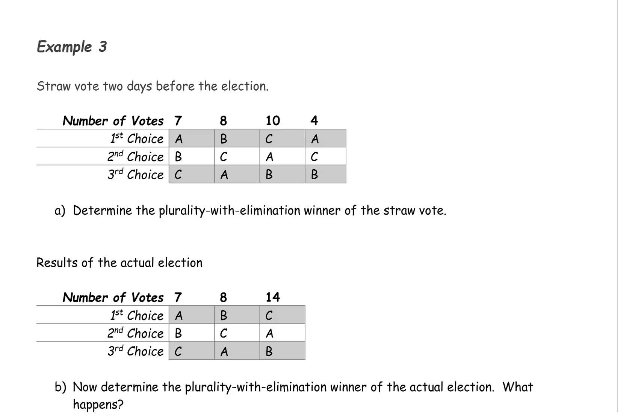With plurality with elimination, we need to figure out how many votes are required for a majority. We add 7 plus 8 plus 10 plus 4. This is 29, so there are 29 total voters. We divide that by 2 to figure out what the majority is, and 29 divided by 2 is 14.5. That means we need 15 votes in order to have a majority.